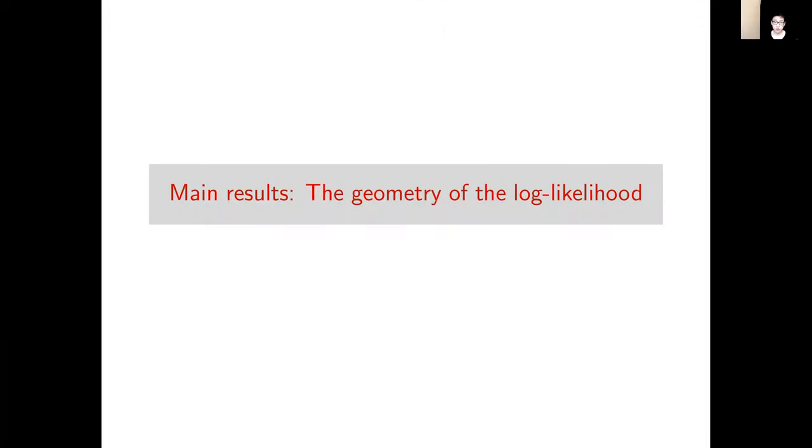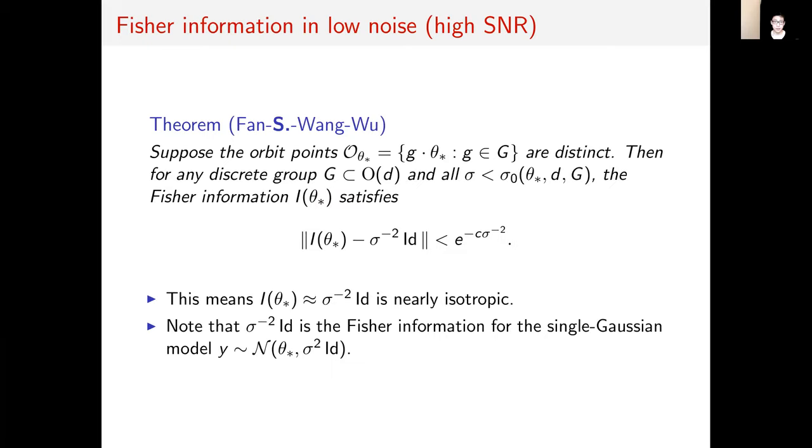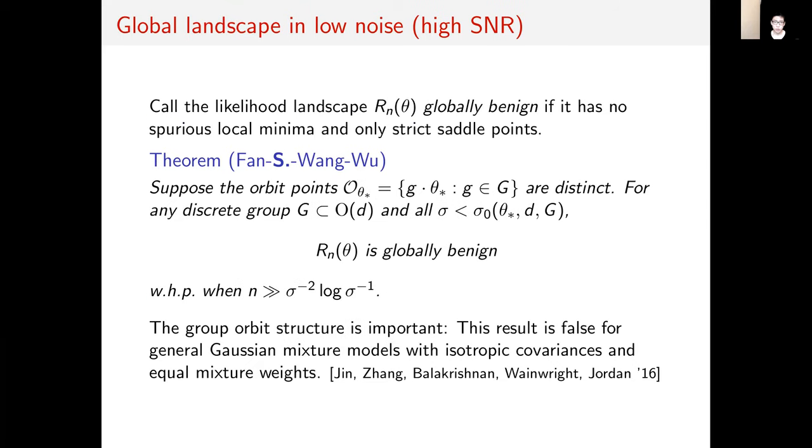Let me now move to our results on the geometry of the log likelihood. First, in the low noise setting, we show that the Fisher information is nearly isotropic. This means that it's very similar to the Fisher information for a single Gaussian rather than a Gaussian mixture.